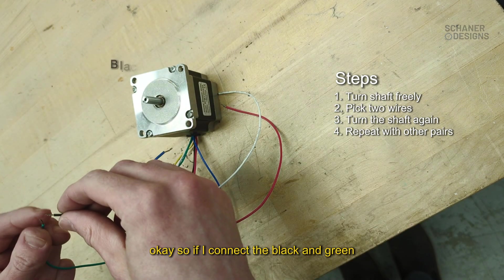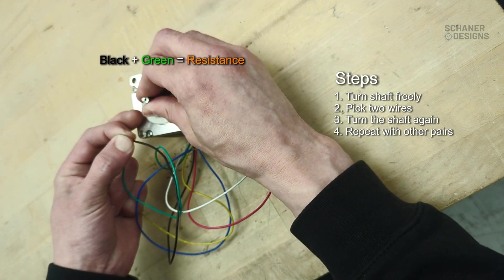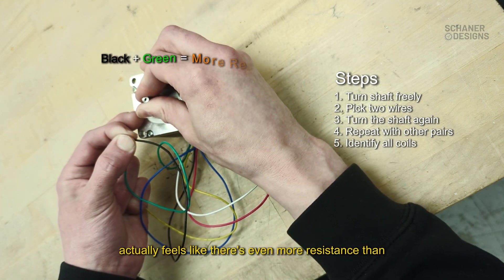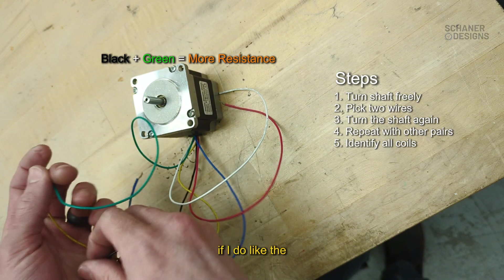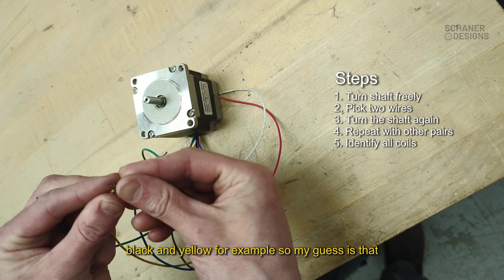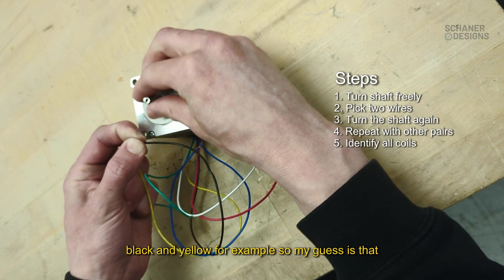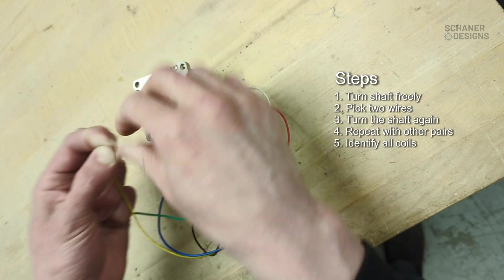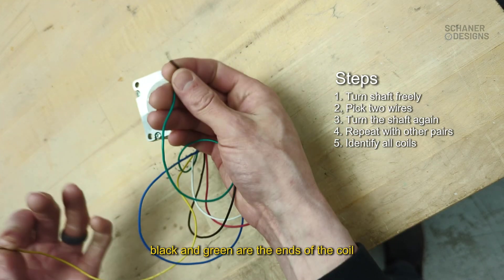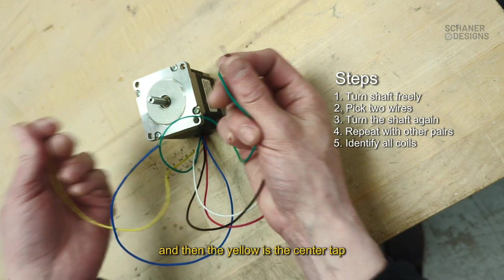If I connect the black and green, it actually feels like there's even more resistance than if I do the black and yellow, for example. So my guess is that black and green are the ends of the coil and then the yellow is the center.